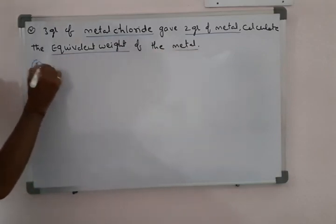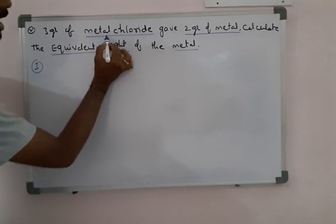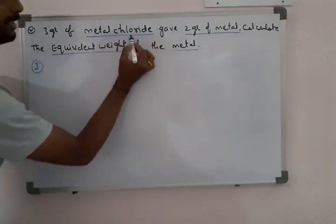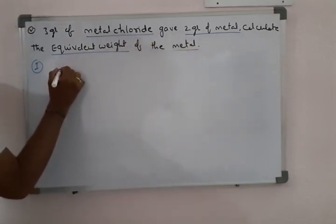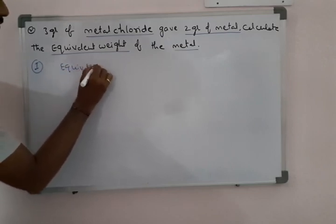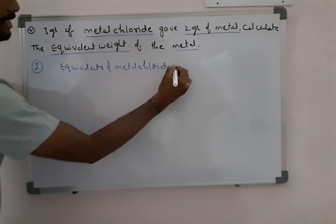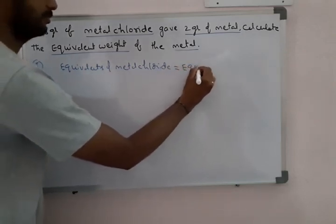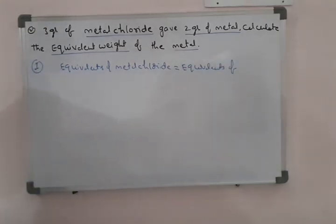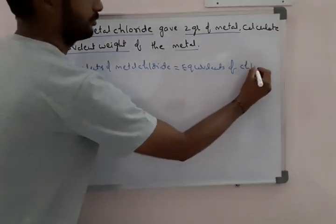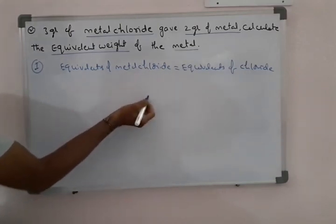First we follow the first method. A metal chloride releases metal and also chloride. So we can write that the equivalence of metal chloride is equal to the equivalence of chloride. Equivalence of metal chloride means its weight divided by equivalent weight.